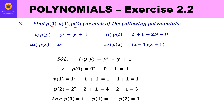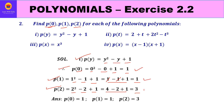Second question: find p(0), p(1), p(2) for each polynomial. For the first polynomial p(y) = y² - y + 1: p(0) = 0² - 0 + 1 = 1; p(1) = 1² - 1 + 1 = 1 (the 1 and -1 cancel, leaving 1); p(2) = 2² - 2 + 1 = 4 - 2 + 1 = 3. So p(0)=1, p(1)=1, p(2)=3.